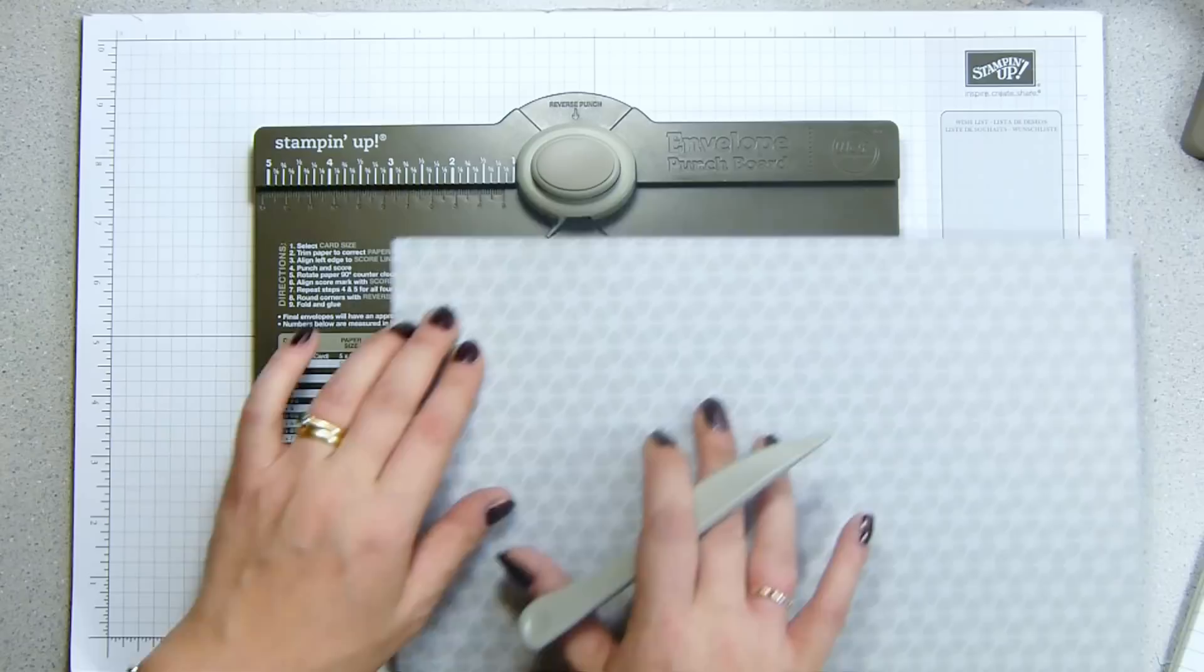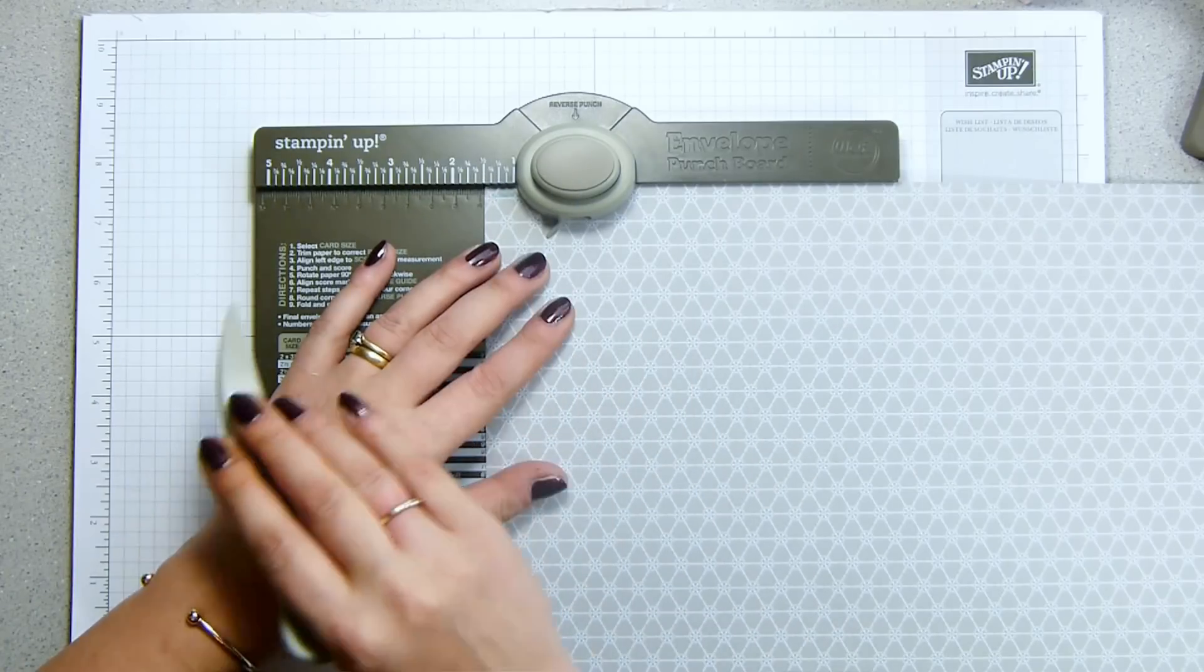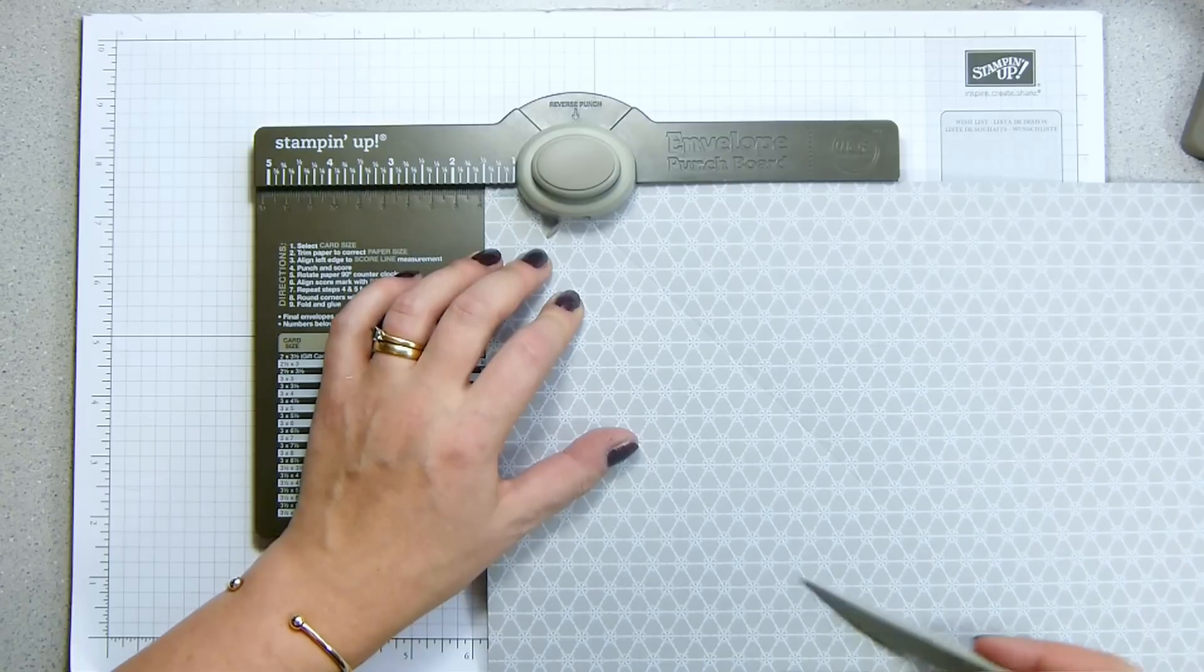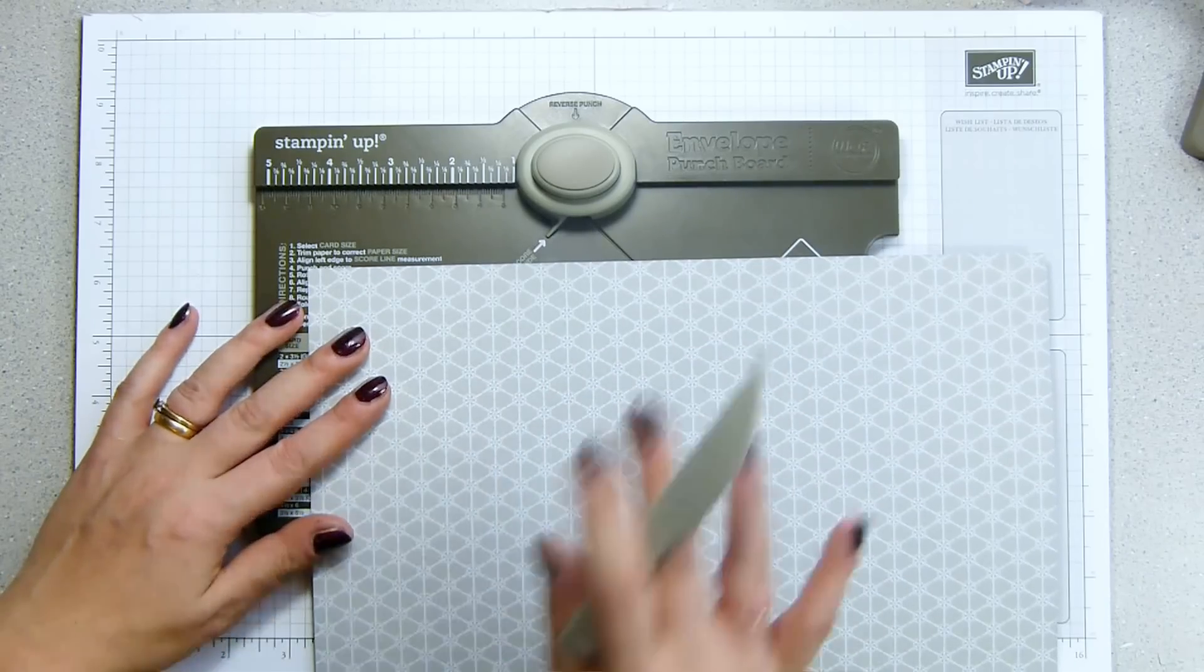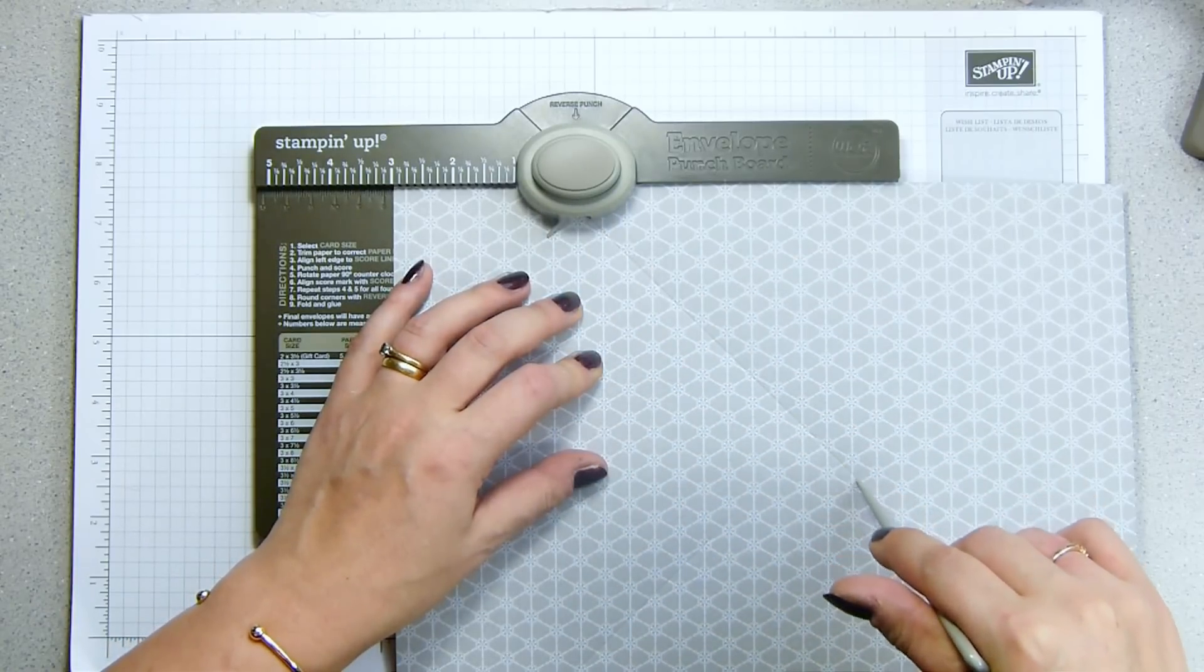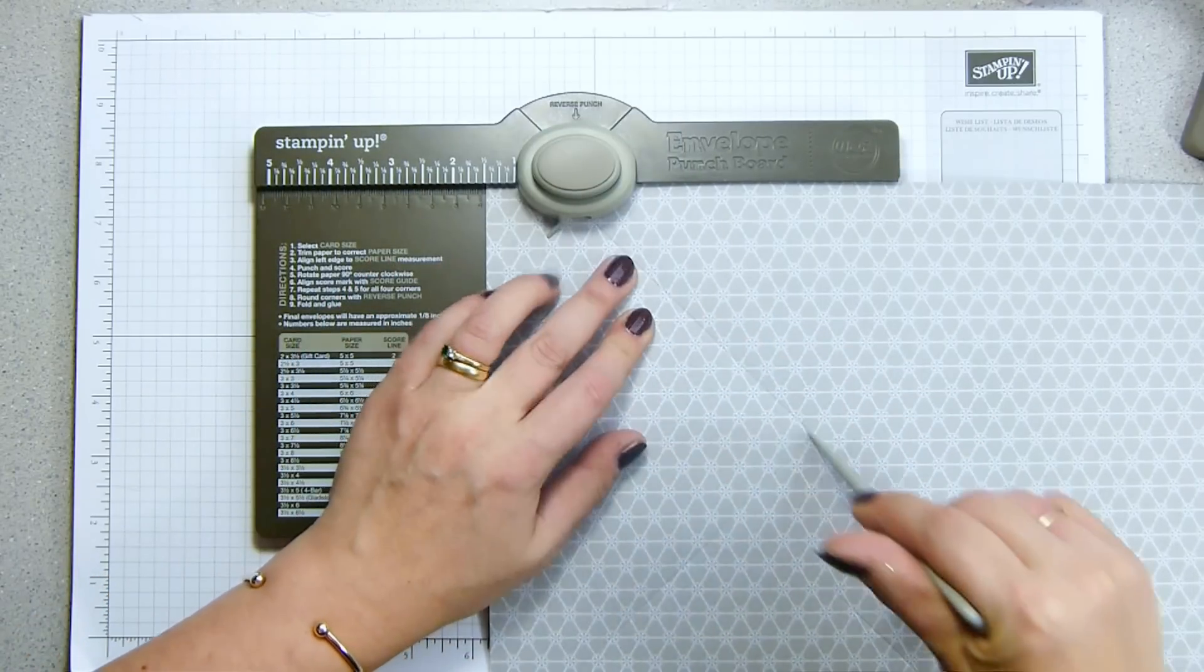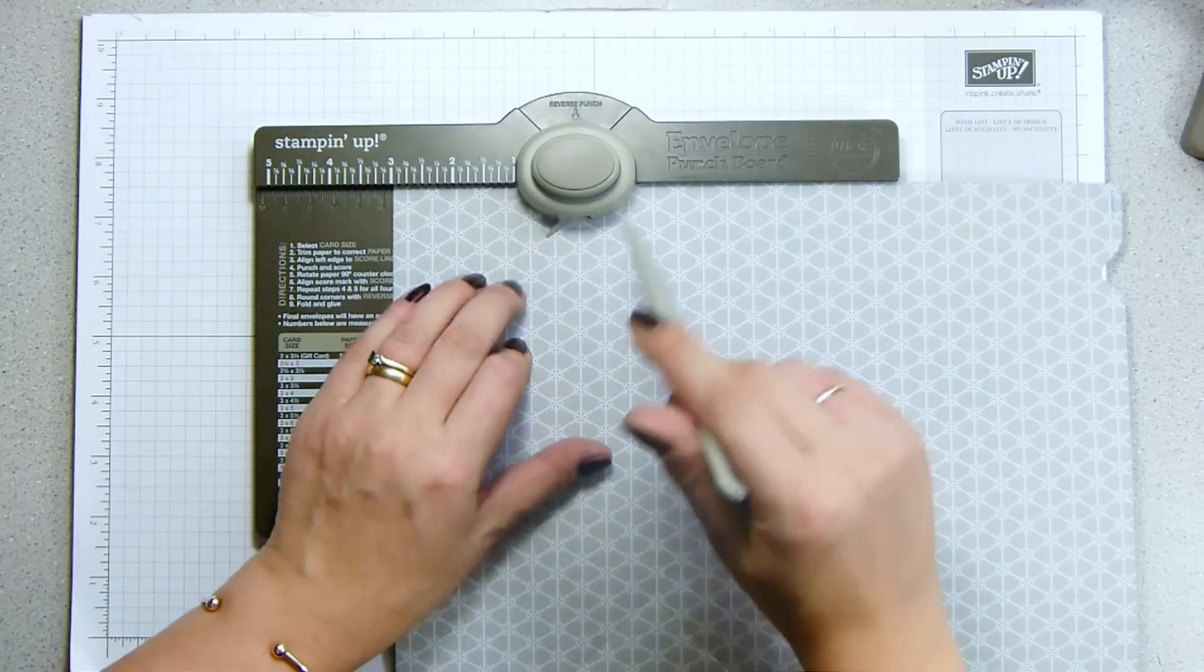So full sheet of designer series paper, we're going to mark it and score it at the one and a half inch mark. Mark that, punch that even and score, but be careful because the paper is going right off the bottom of the punch board. Then turn it round and this time you're going to punch at three and score down. And again be careful not to go too far, and then back for the third time at one and a half and score down, and then at three and score down.